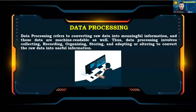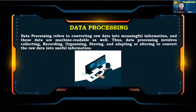Data processing refers to converting raw data into meaningful information, and this data is machine-readable as well. Data processing involves collecting, recording, organizing, storing, and adapting or altering raw data to convert it into useful information.